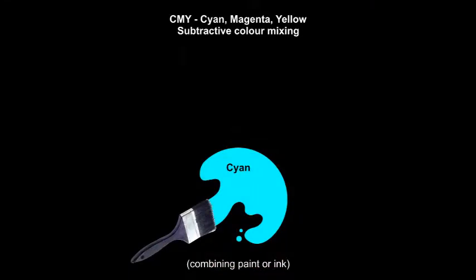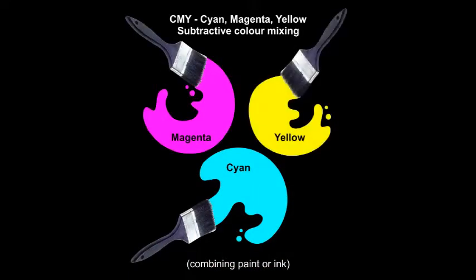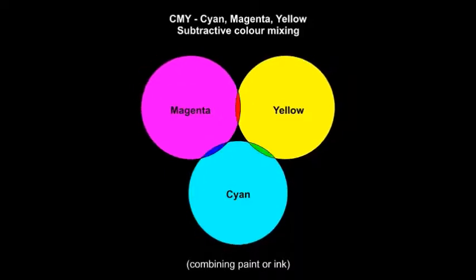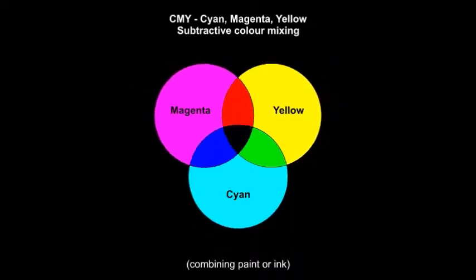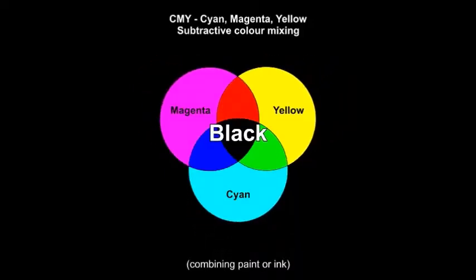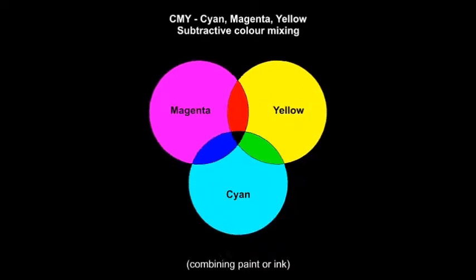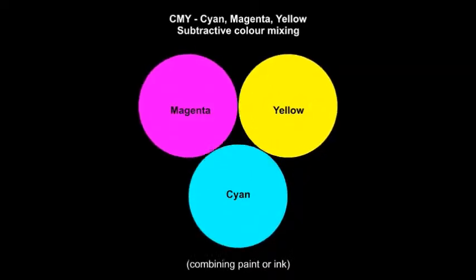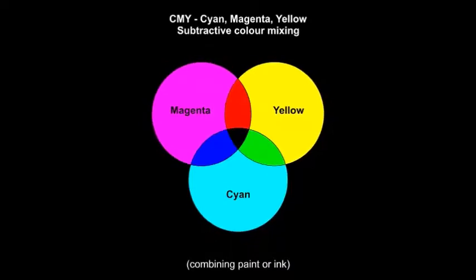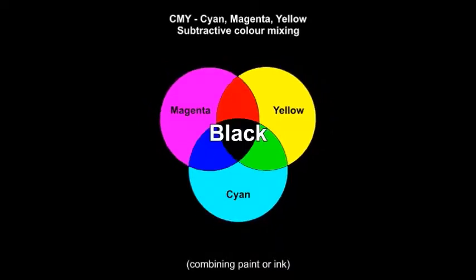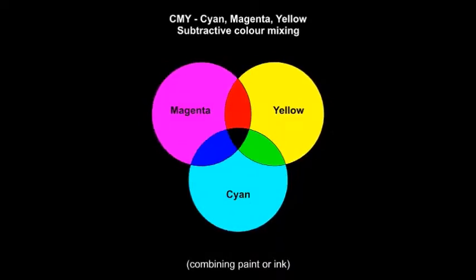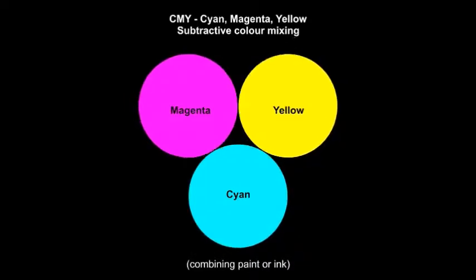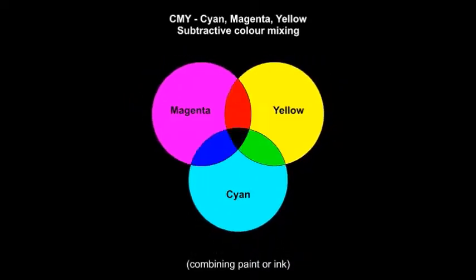Likewise, when we are working with paint, ink, or other pigments, we are seeing reflected light. When we are mixing paint and seeing reflected color, it is called subtractive color mixing. It is called subtractive color mixing because we see less light and darker colors with each addition of a different hue.